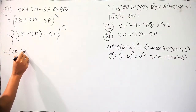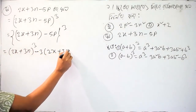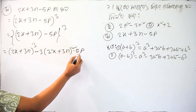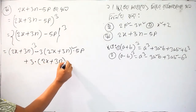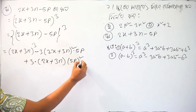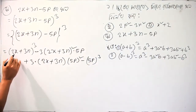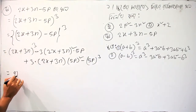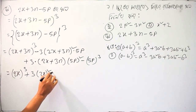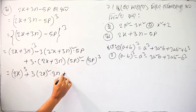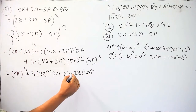2x plus — A cube means a cube minus 3A square B, where B means 5p, plus 3A B square minus B cube, meaning 5p whole cube. Then a cube plus 3a square B plus 3a B square plus B cube.